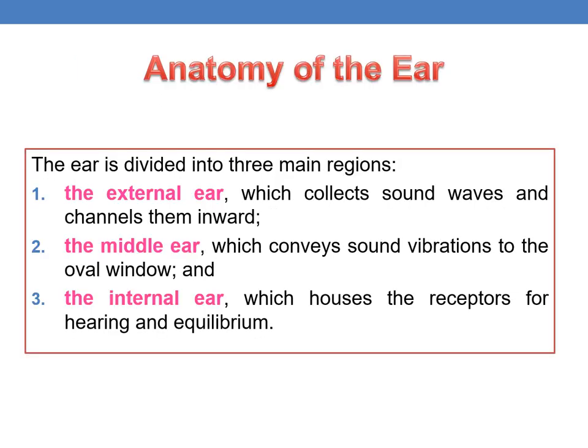The ear is divided into three major regions: the external ear, the middle ear, and the inner ear. The external ear collects sound waves and channels them inward. The middle ear conveys sound vibrations to the oval window. The inner ear houses the receptors for hearing and equilibrium.